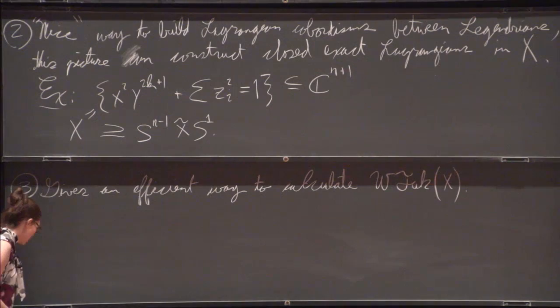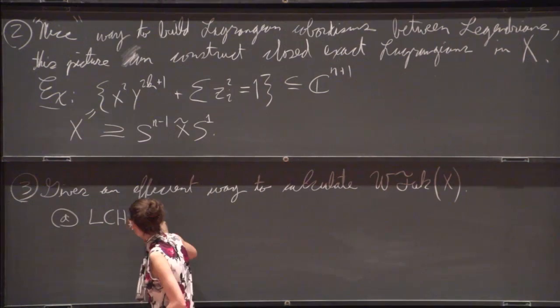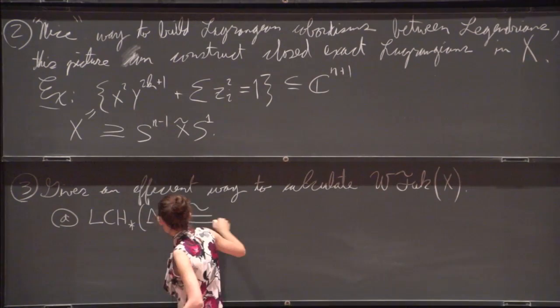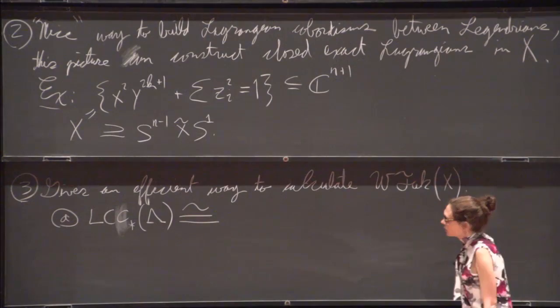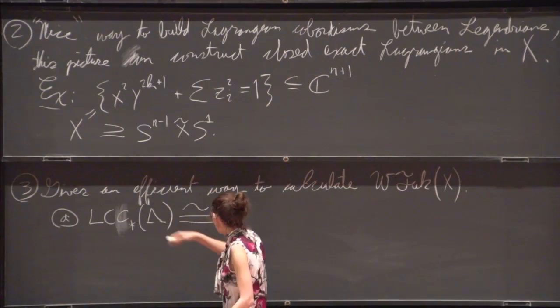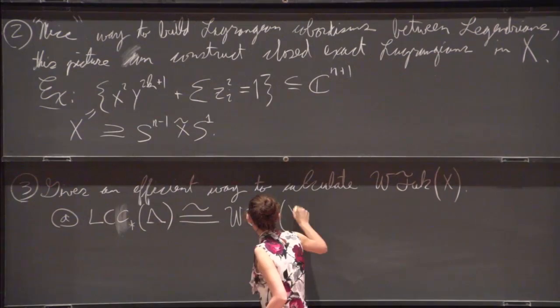The reason for this is kind of a couple things. So first of all, we kind of generally expect, I guess is a way to put it, that the Legendrian contact homology of lambda, I should really write this as chain complex, so this is a DGA, is quasi-isomorphic as an A-infinity algebra, or infinity category if this is a link, to the wrapped Fukaya category of X.